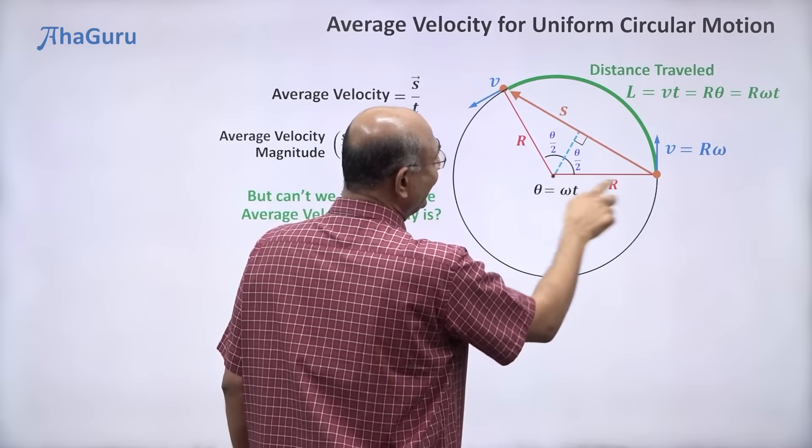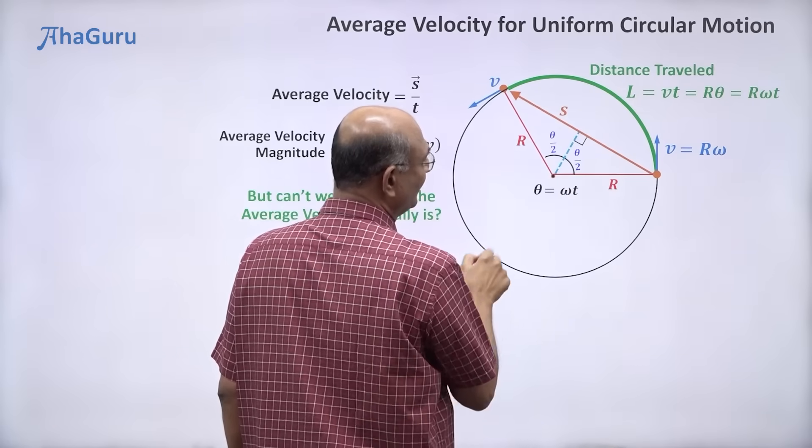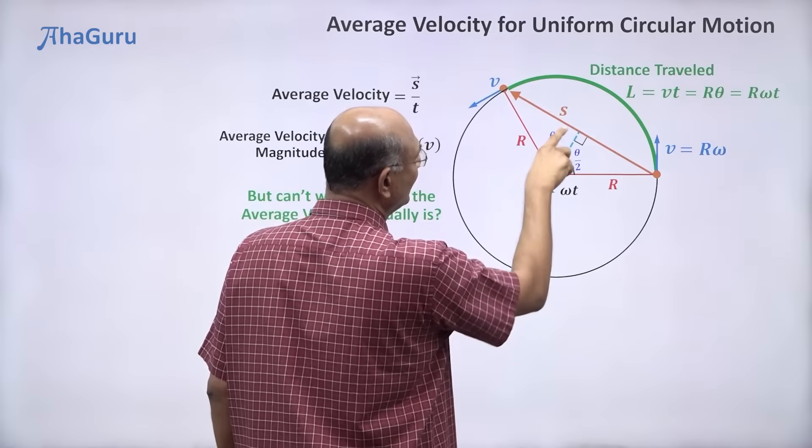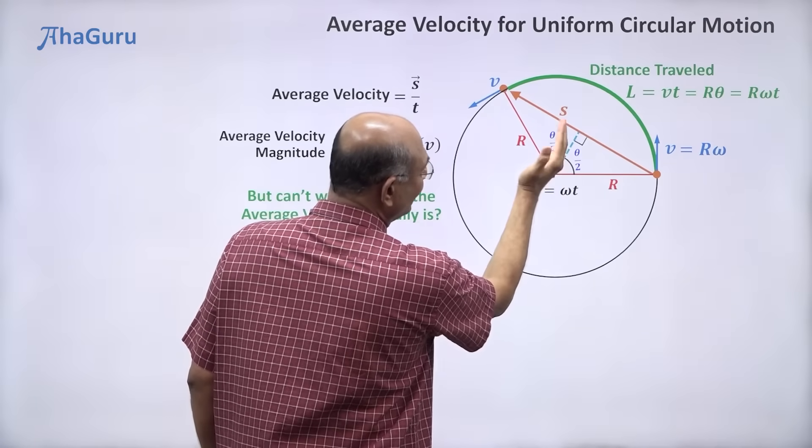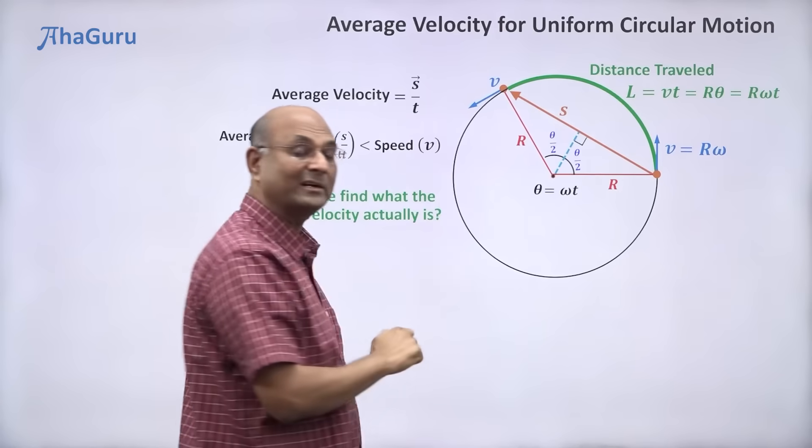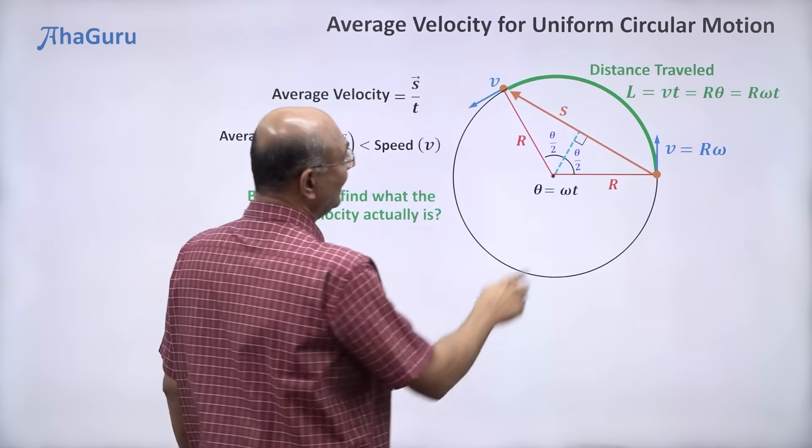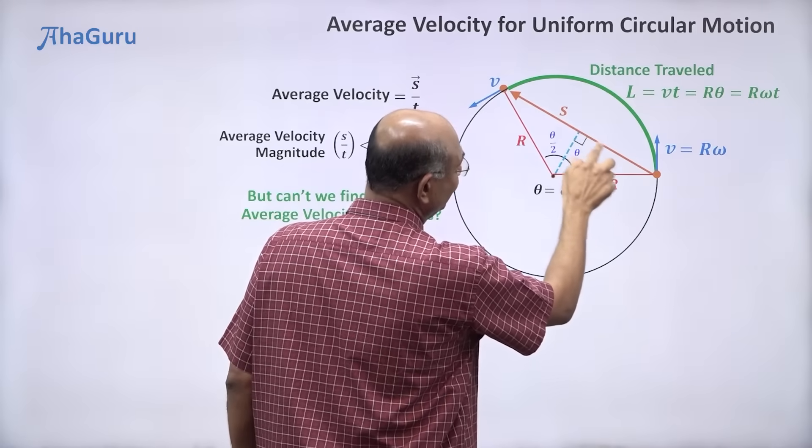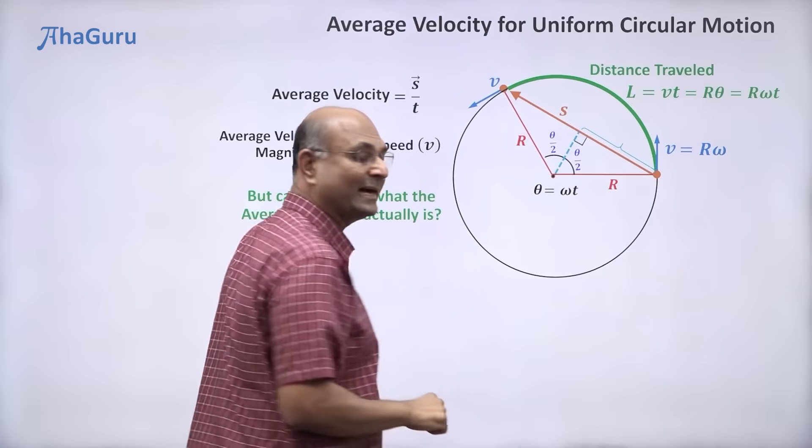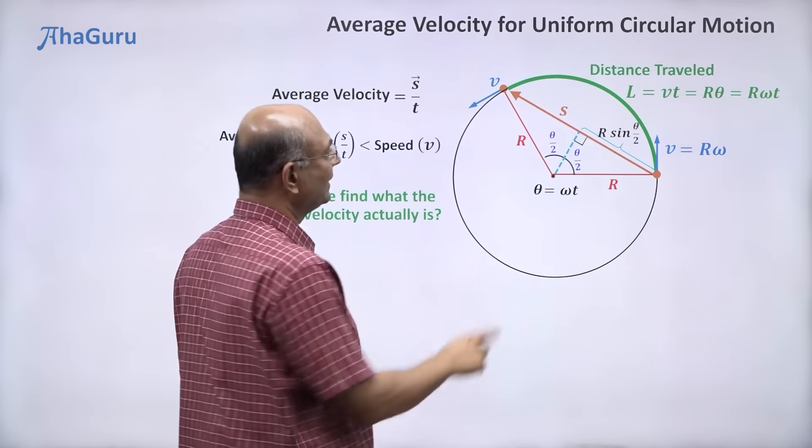Now this is a right angle triangle. This is the hypotenuse, r is the hypotenuse. This angle is theta by 2. So what about this? r cos theta by 2 will be this dotted blue line. And r sin theta by 2 will be this. So this will be r sin theta by 2.